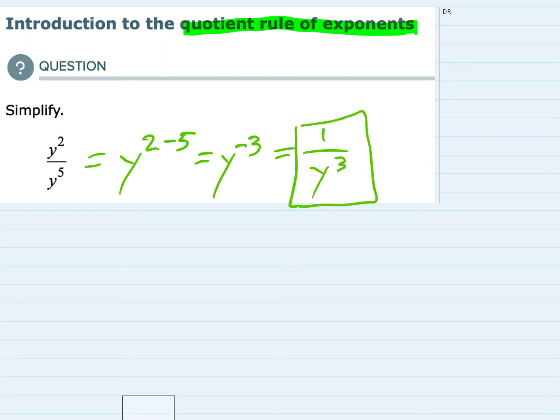So we've simplified that expression. Just to look at this one other way before moving on, I'm going to rewrite this as y squared, which is y times y, divided by y to the fifth.